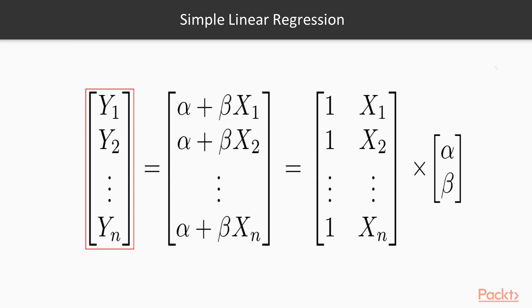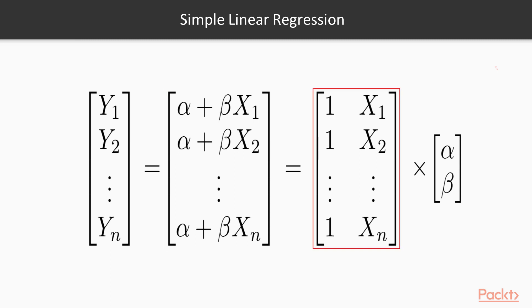The model for linear regression can also be written in vector notation. This vector notation is equivalent to the equation for simple linear regression. Y is a column vector of values of the response variables for the training examples. Beta is a column vector of the values of the model's parameters. X, which is sometimes called the design matrix, is an M by N dimensional matrix of the values of the explanatory variables for the training examples. M is the number of training examples and N is the number of features.